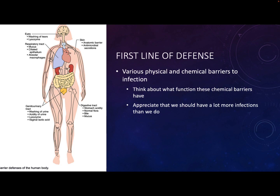The digestive tract also has innate immune barriers. Stomach acidity is awesome — it can help get rid of lots of microorganisms that you ingest on a daily basis, especially if you eat undercooked meat. You have your normal flora, which also helps protect your gut from invaders establishing an infection. You have bile, which can help protect, and you have mucus. For the most part, every person on the planet should have all of these things, and they should help protect against, very broadly, any type of infection.